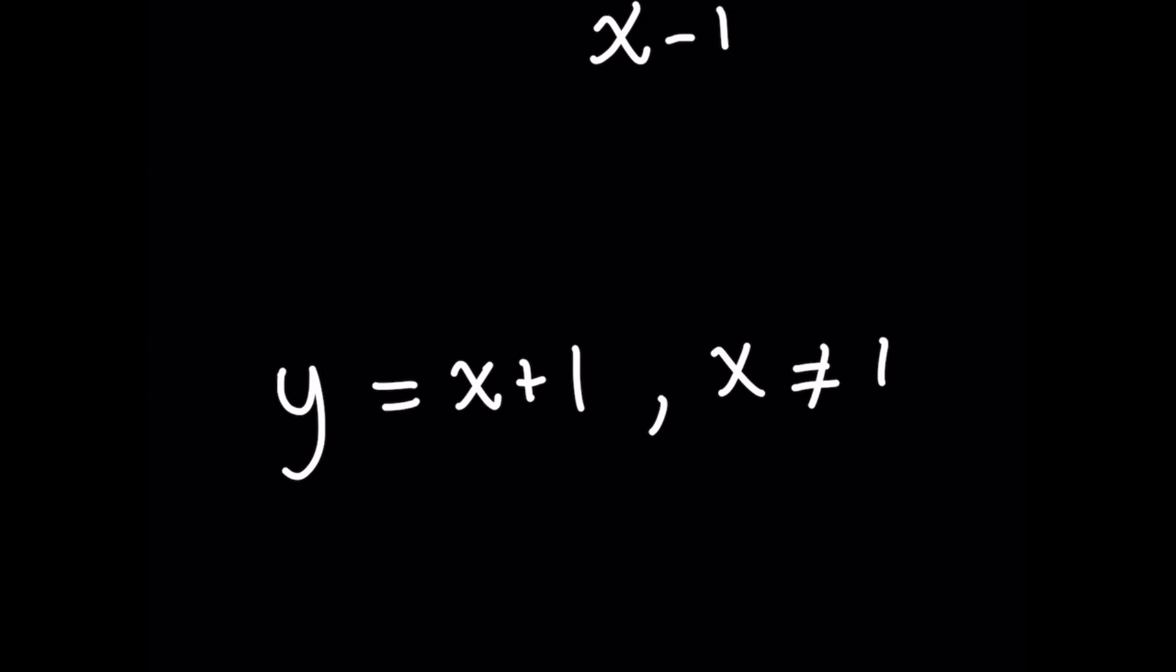Moving on, what Mario needs to do here is restrict his domain. He needs to say that he's got y equals x plus 1, but we know now that x cannot be 1. And so Peach is realizing that he's starting to learn some more about math.